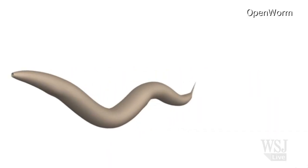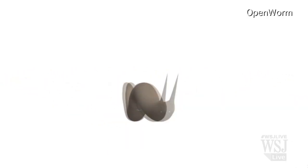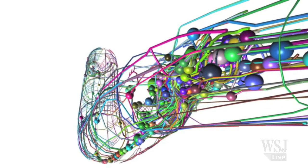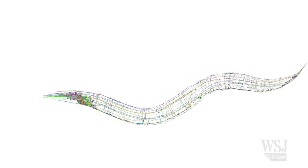The scientists picked the common round worm called C. elegans for the project because its brain has been extensively studied around the world. The first map of all its neural connections was published in 1986.